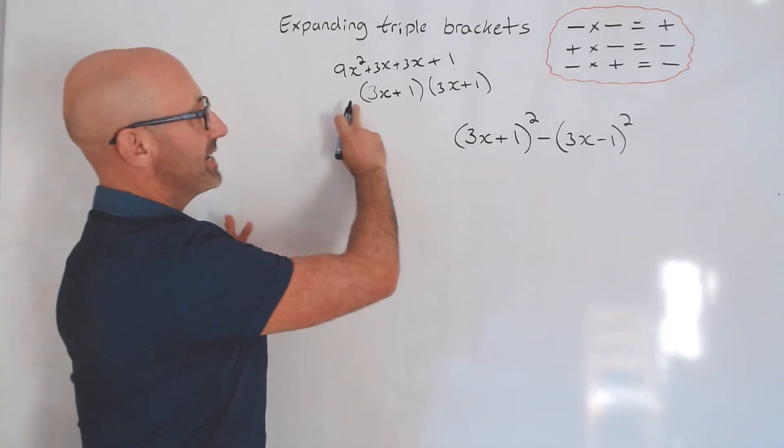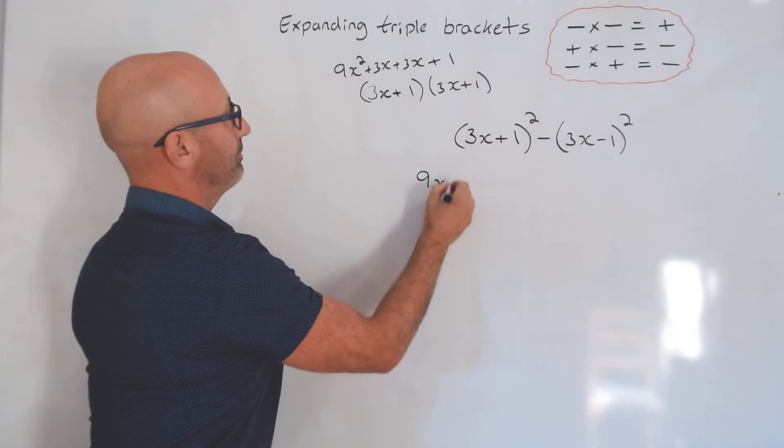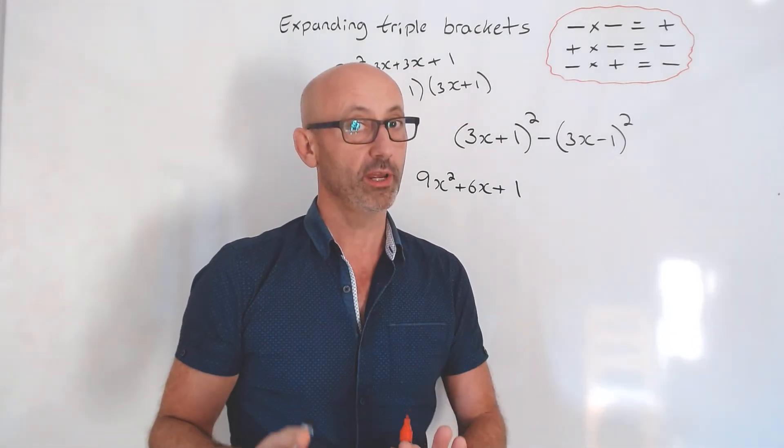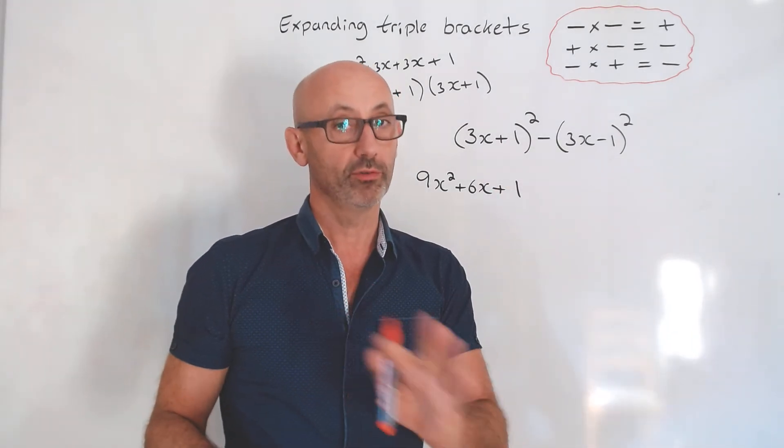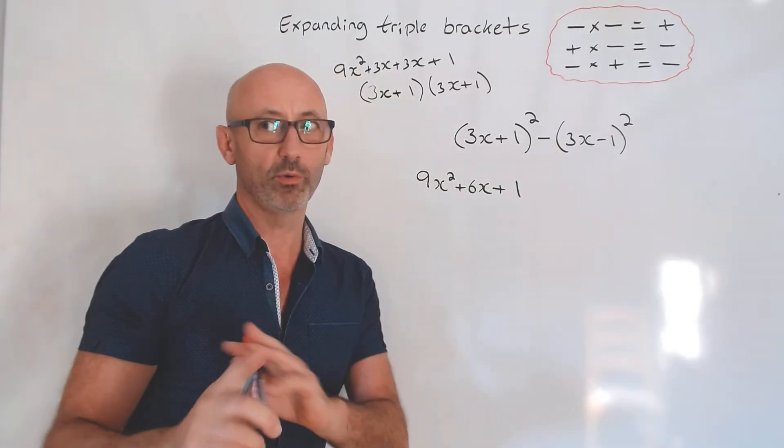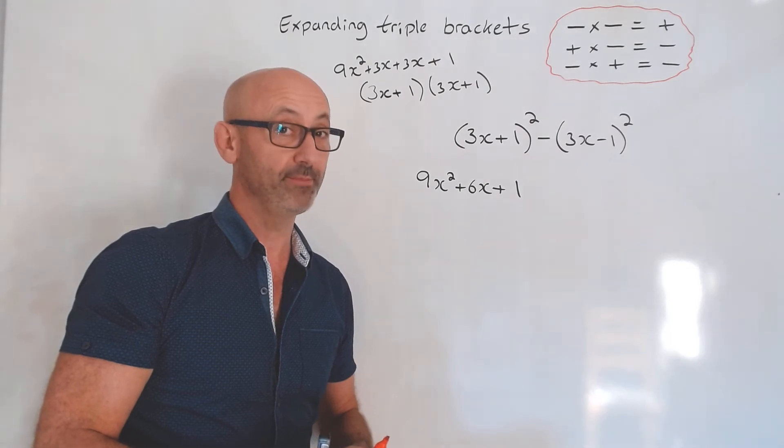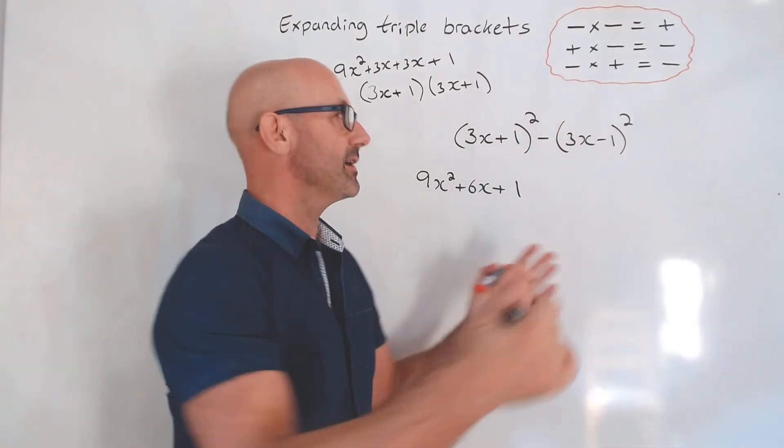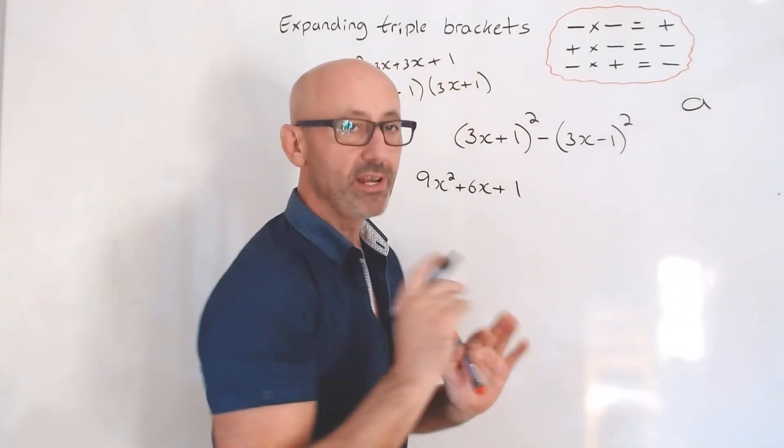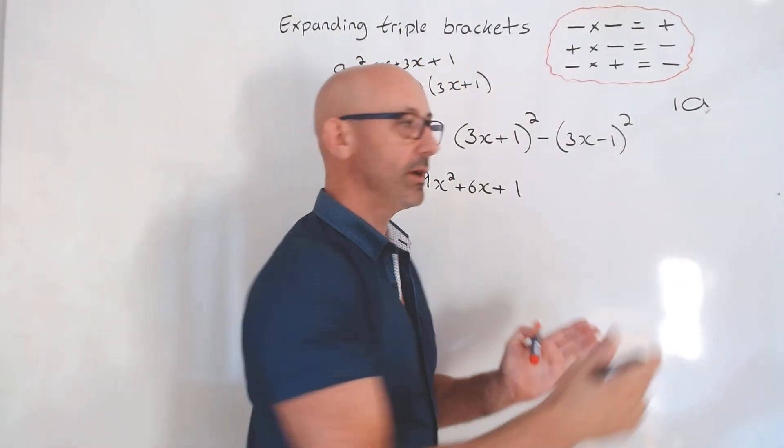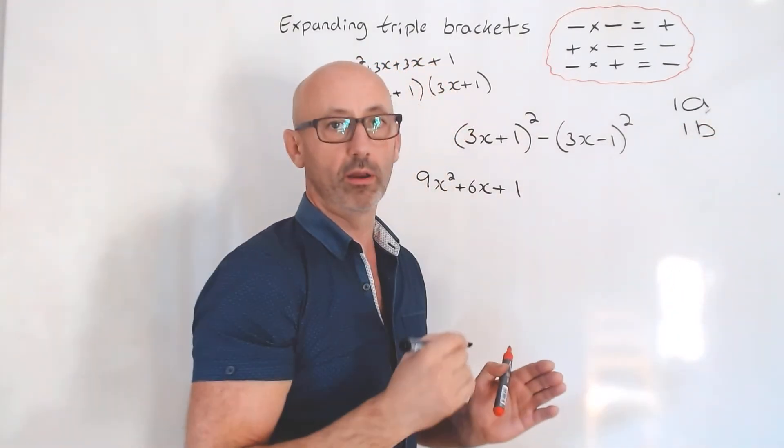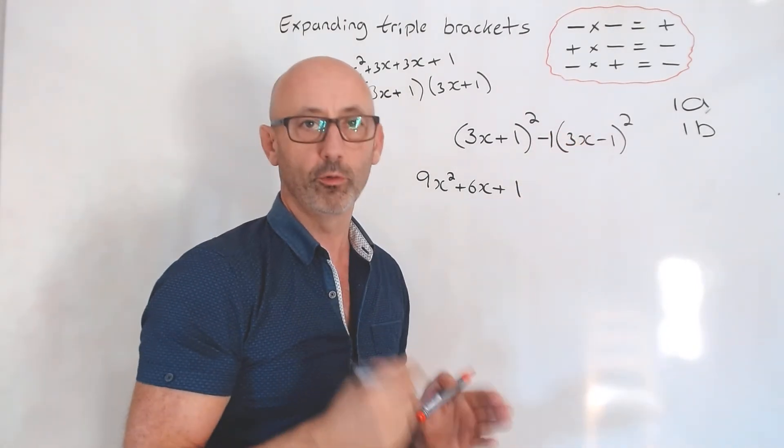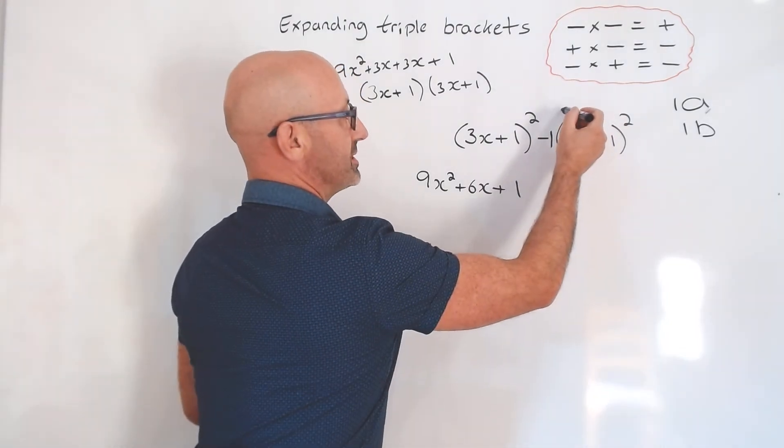Typically I find that people get this question wrong. I want to talk you through it step by step. Whenever you see anything squared, always write it out twice. I would recommend that you times out this bracket at the side, and we should be able to end up with that down. You've probably got one mark out of three if you've got that bit right on the GCSE paper. This is where the problem is, this is where everyone tends to cock up really.